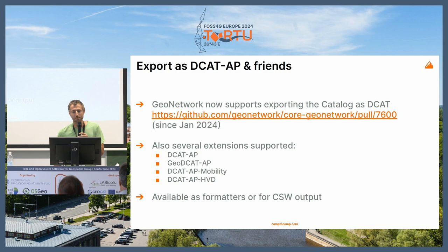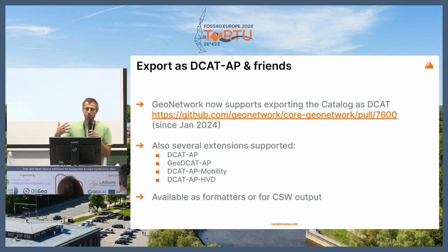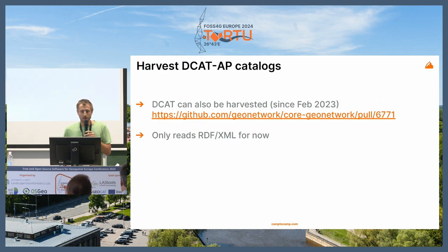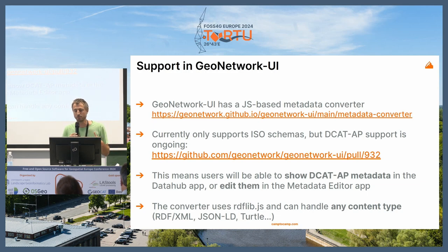A quick word about GeoNetwork — it's important to have this kind of thing within our platform. From INSPIRE, it's more about ISO, but from user experience we see that people want more and more to jump into the semantic way. There is a lot of export to DCAT, DCAT-AP, DCAT-Mobility, and various things, which is going in the right direction. It's available through GeoNetwork formatters and from CSW output. GeoNetwork is also able to harvest semantic catalogs. There is a new editor in GeoNetwork UI to load DCAT or DCAT-AP and transform that.